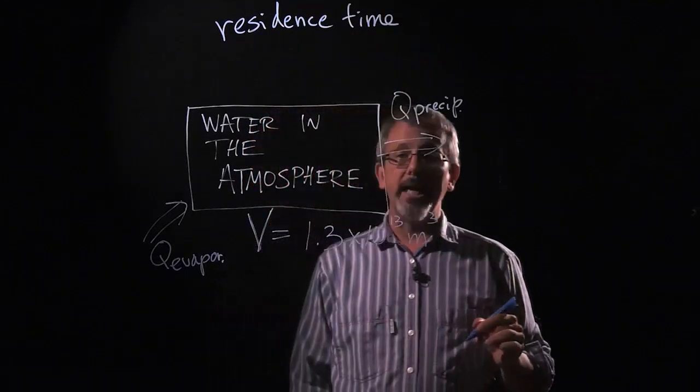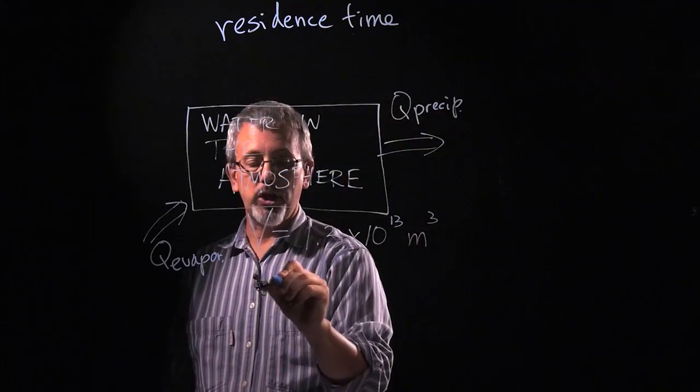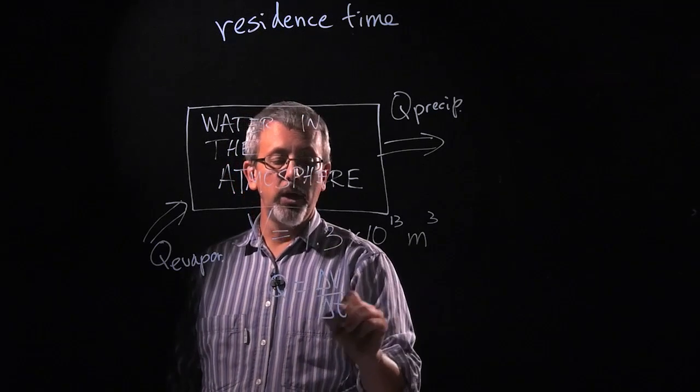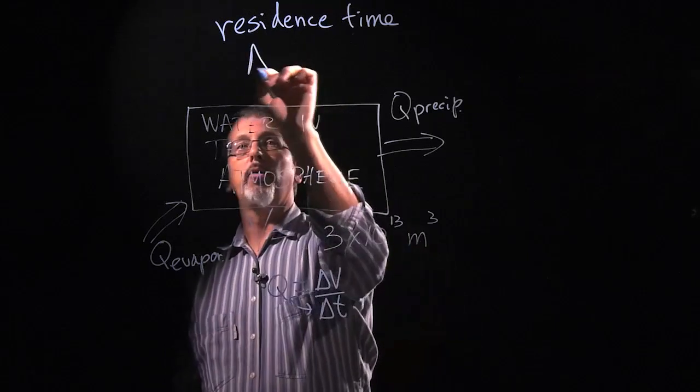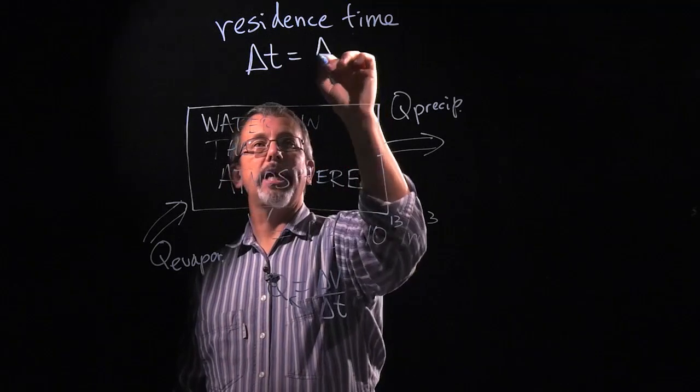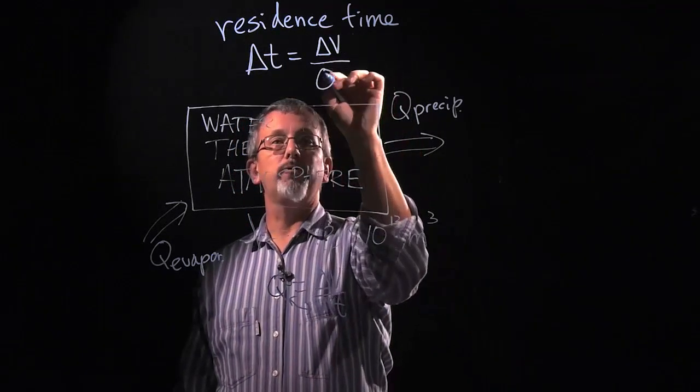In this case, we can reverse our definition. Remember our definition here that flow is equal to the change in volume over the change in time. Well, if we do a little algebra, the residence time is equal to that change in volume, basically the entire volume, divided by the flow.